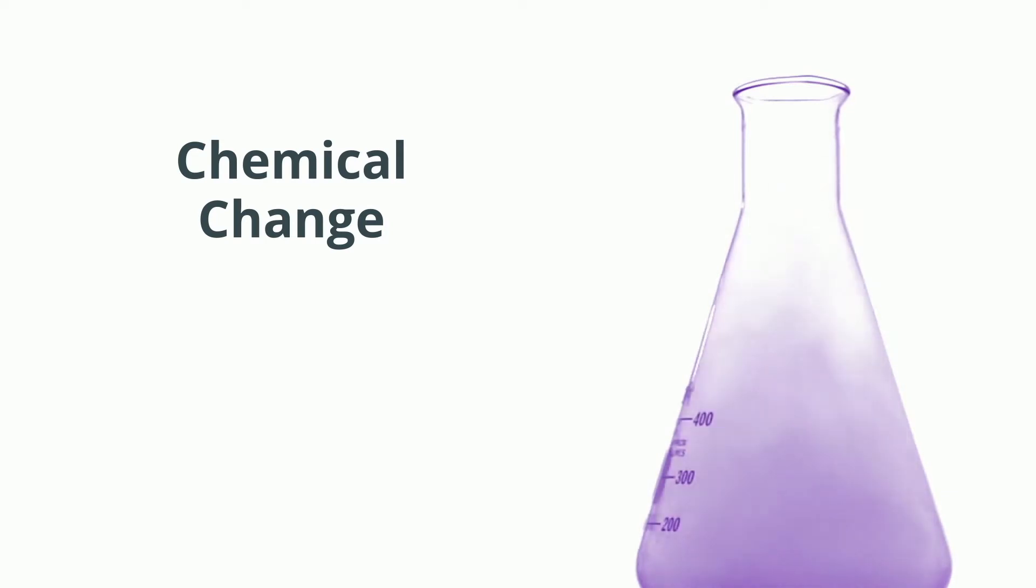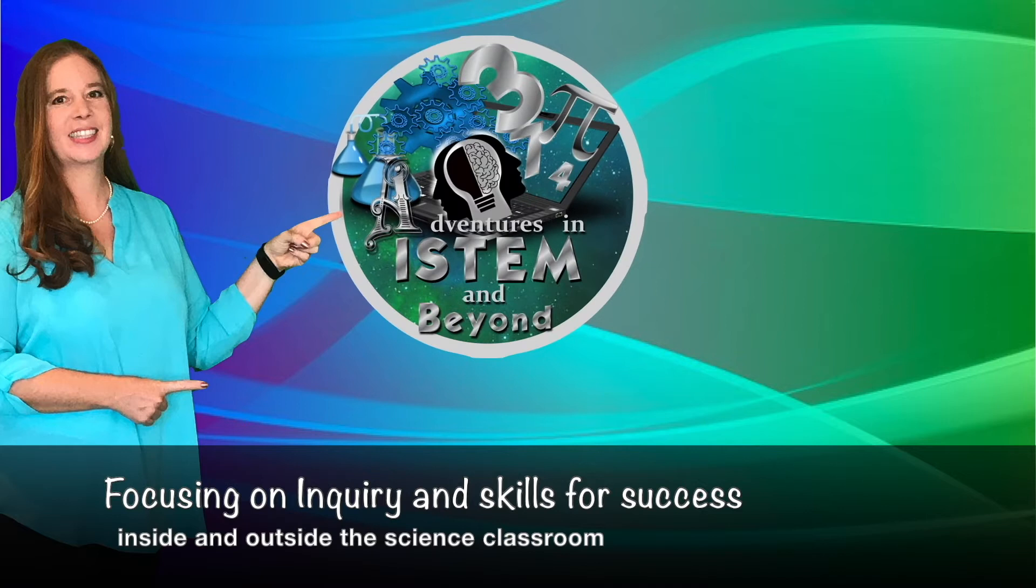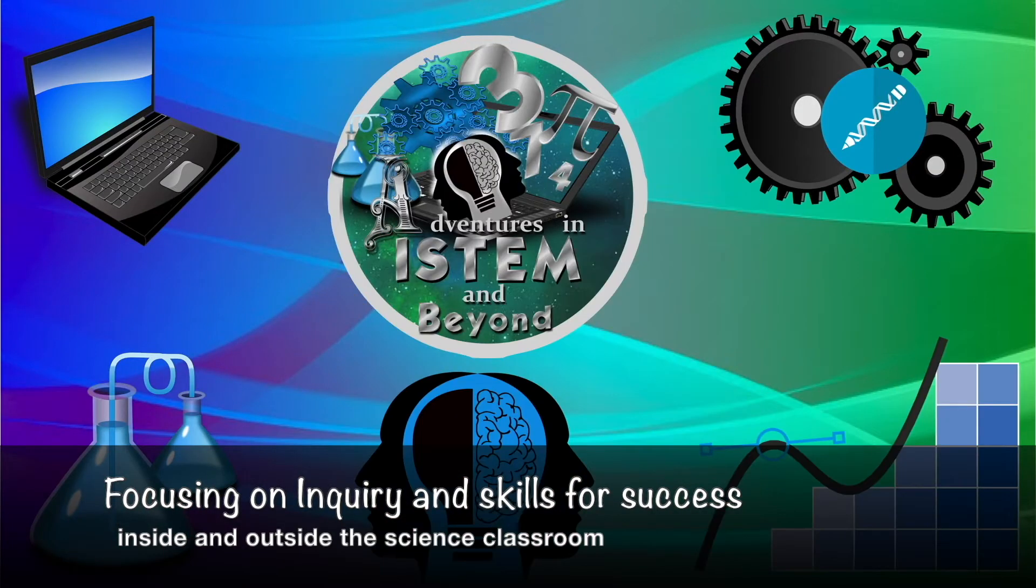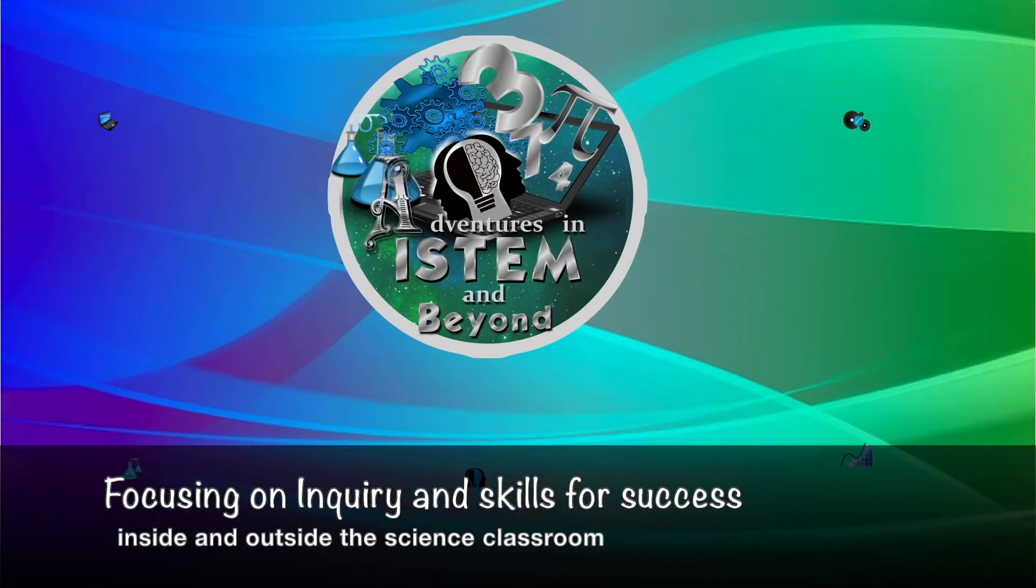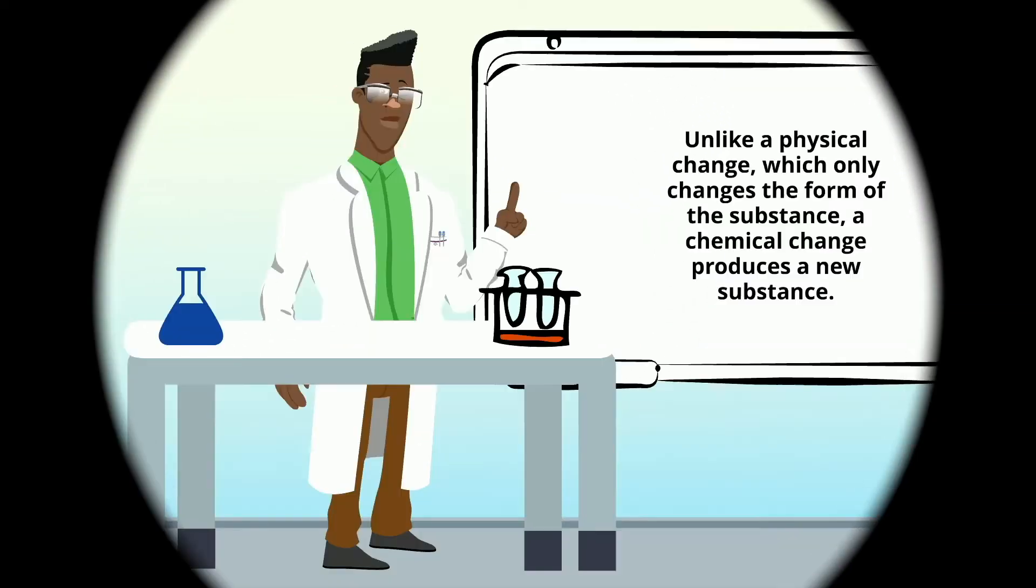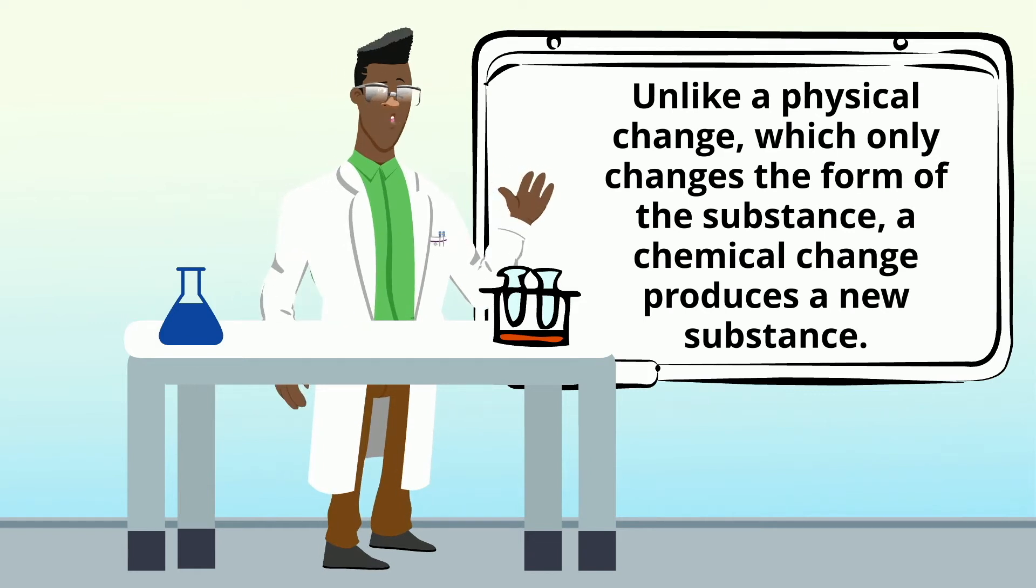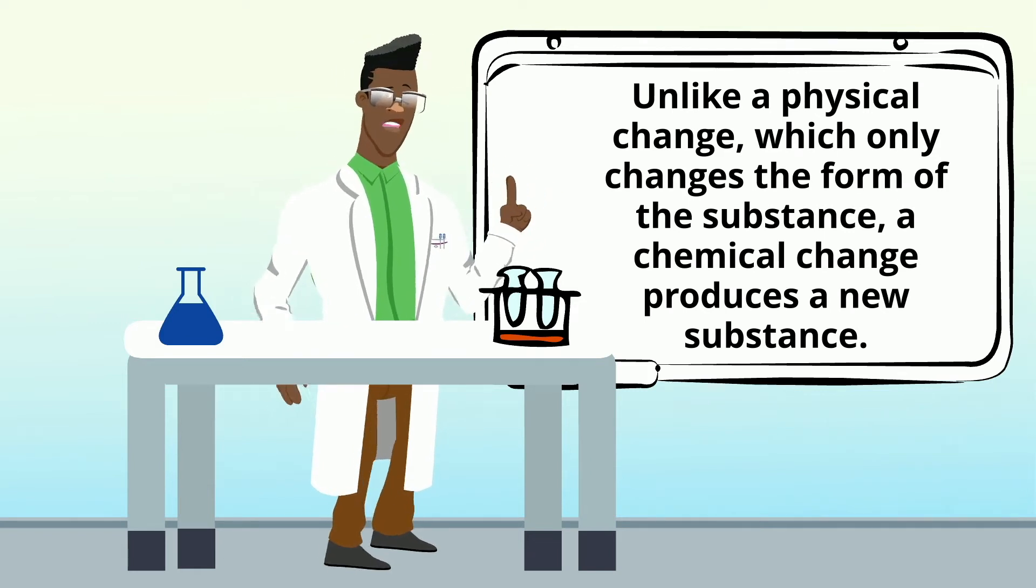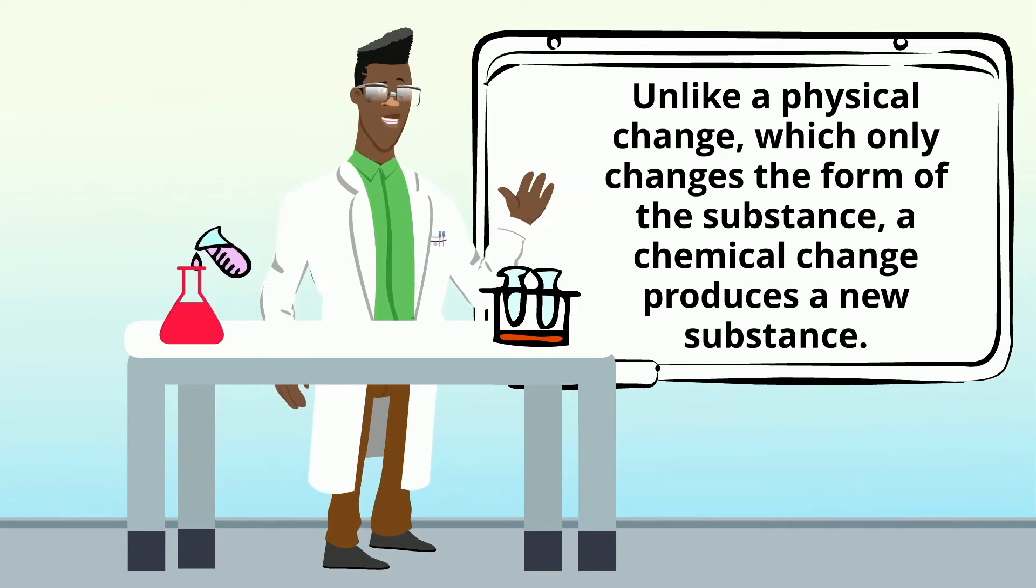Chemical Change. Unlike a physical change, which only changes the form of the substance, a chemical change produces a new substance.